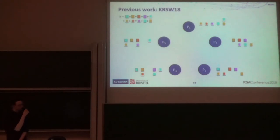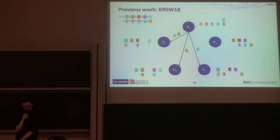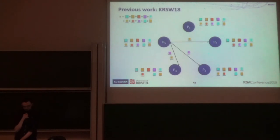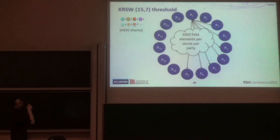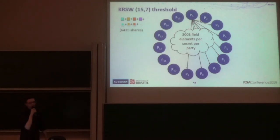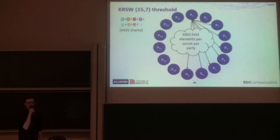As I mentioned, KRSW showed that you can generalize the method of Furukawa et al. to work for any access structure using replicated secret sharing. You can see that P1 is sending four elements, but asymptotically it only has to send to half the other parties. They send the elements, check the hashes are the same, and only output the secret if all the hashes match. The disadvantage is that it scales by the number of parties — if you've got 15 parties and seven are corrupt, you still have to send thousands of field elements per party for every secret you want to open, which is really inefficient.